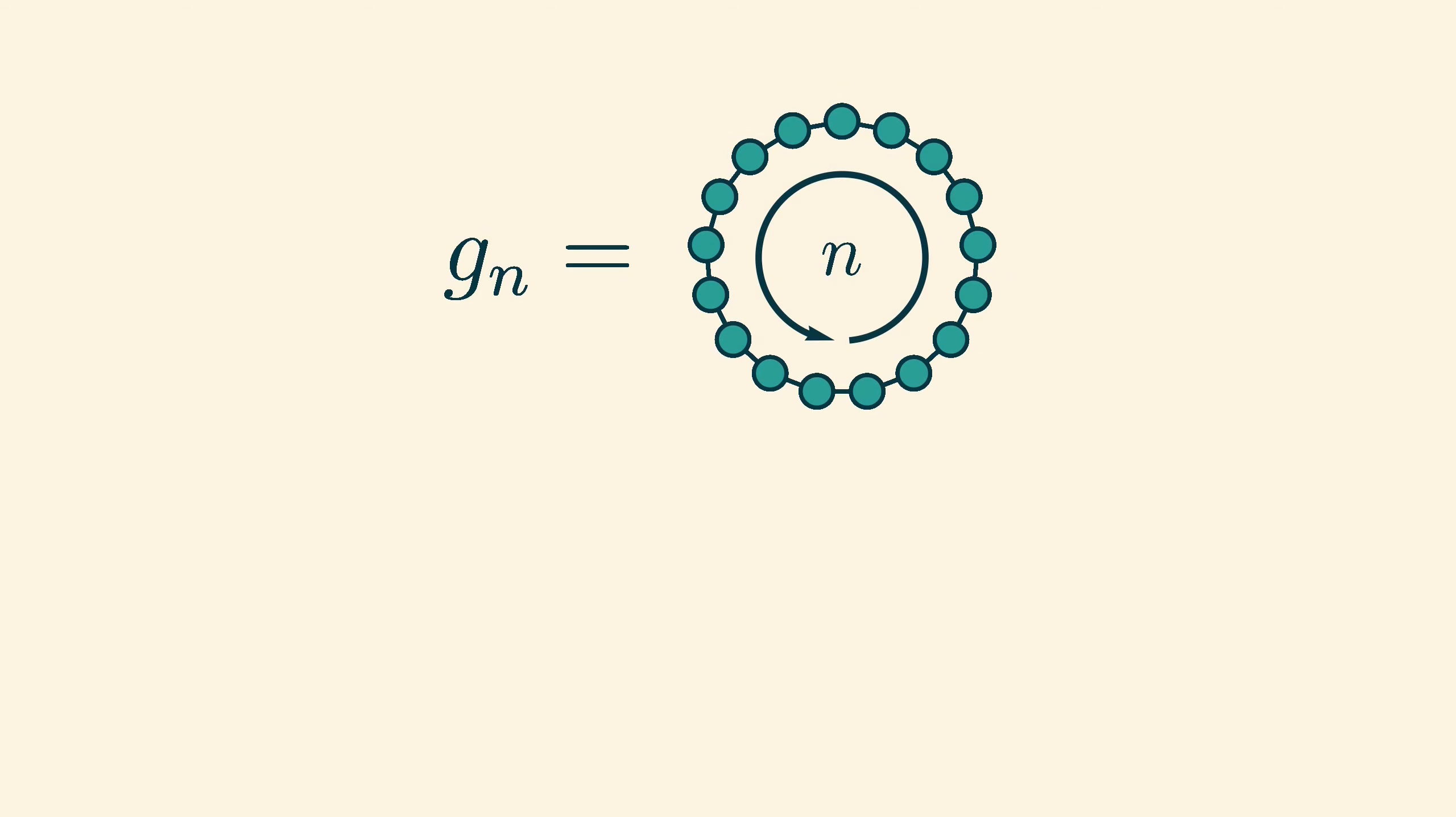Here is another example. Let Gn be the cycle graph with n vertices. As long as n is greater than 2r plus 1, the r ball around any vertex of the cycle is isomorphic to a path graph rooted in the middle. So, the limit of the unrooted cycle graphs is again the random rooted graph which is concentrated on the rooted two-way infinite path graph.